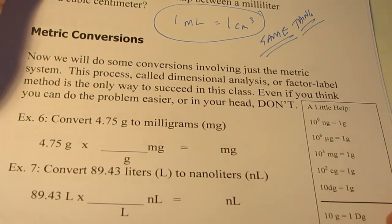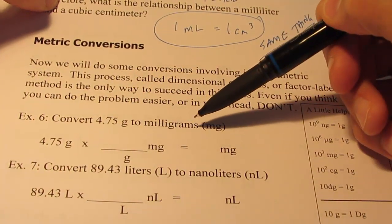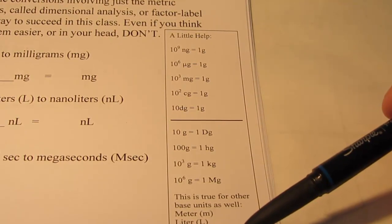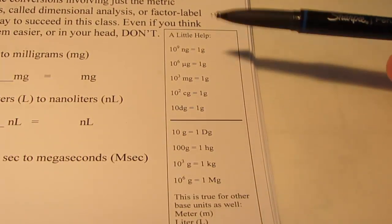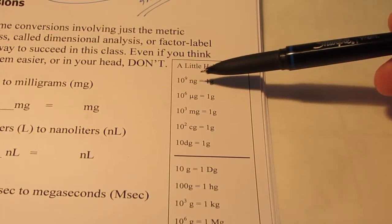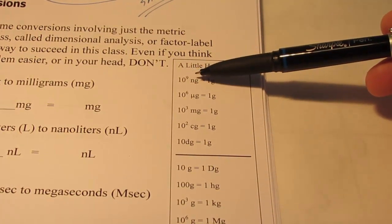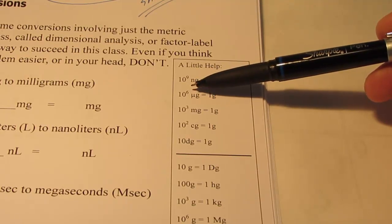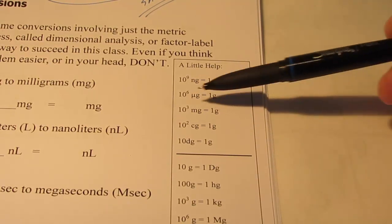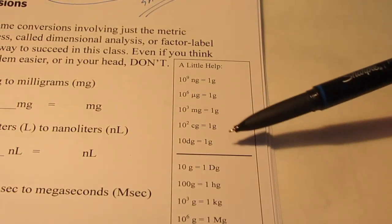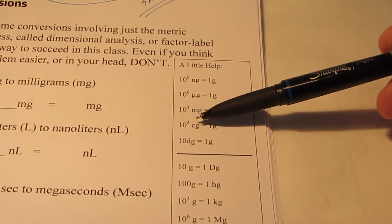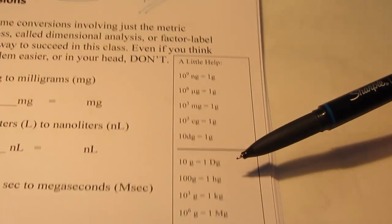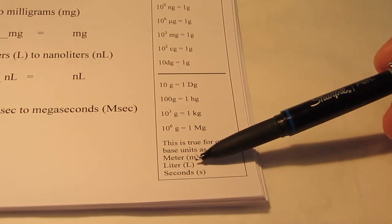So let's start with converting 4.75 grams into milligrams. I've given you a little help on the side of our notes, and the same thing is in your manual — from page 29 of your textbook where we have some prefix meanings. In one gram there are a billion nanograms (ten to the ninth). In a gram there are a million or ten to the sixth micrograms. In one gram there are a thousand or ten to the third milligrams. In a gram there are one hundred centigrams, and in a gram there are ten decigrams.